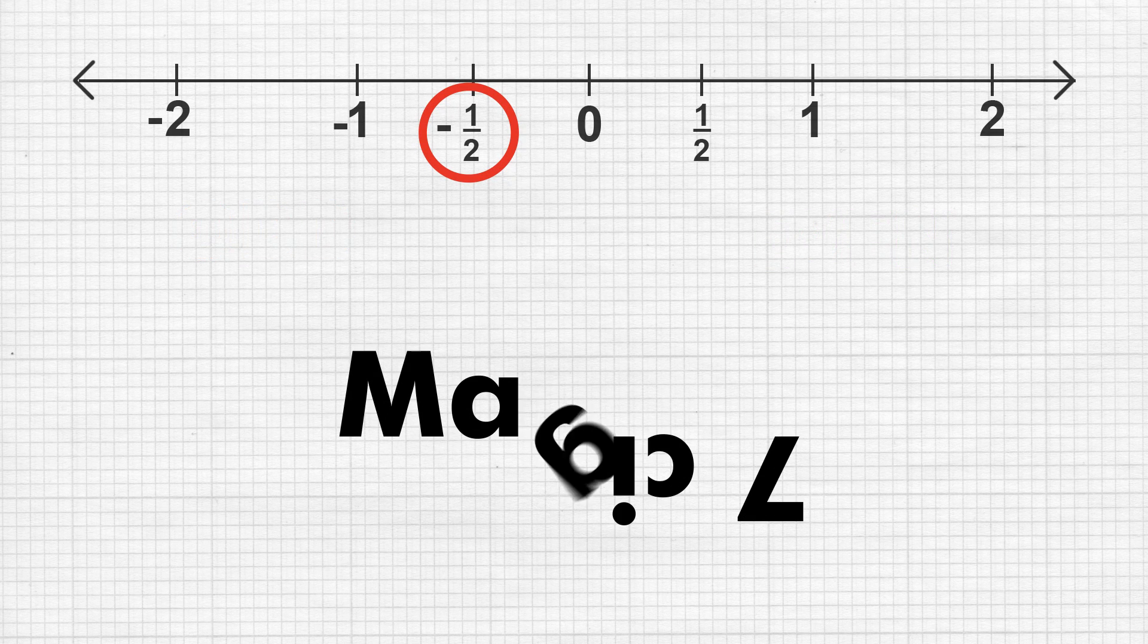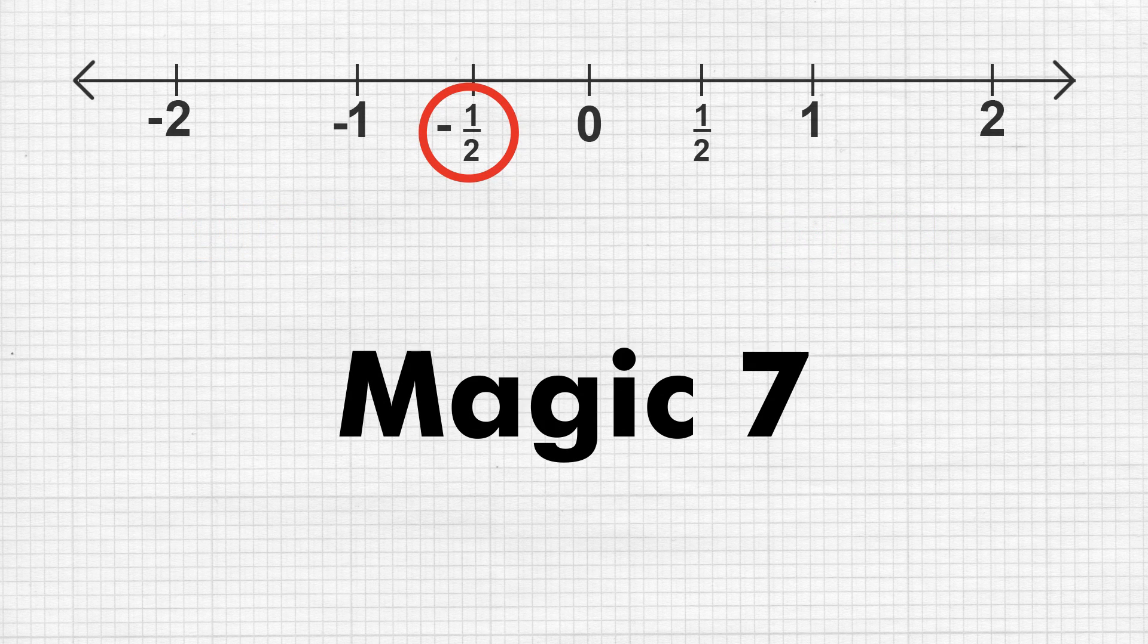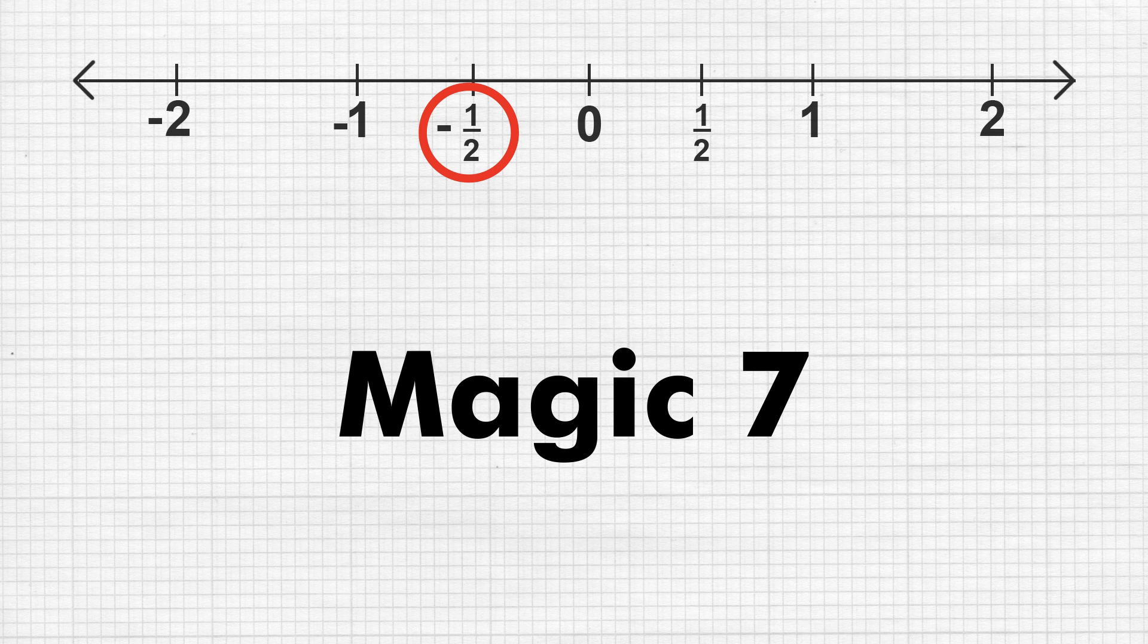With this, we complete our magic 7 numbers. The 7 magic numbers we studied are 0, half,